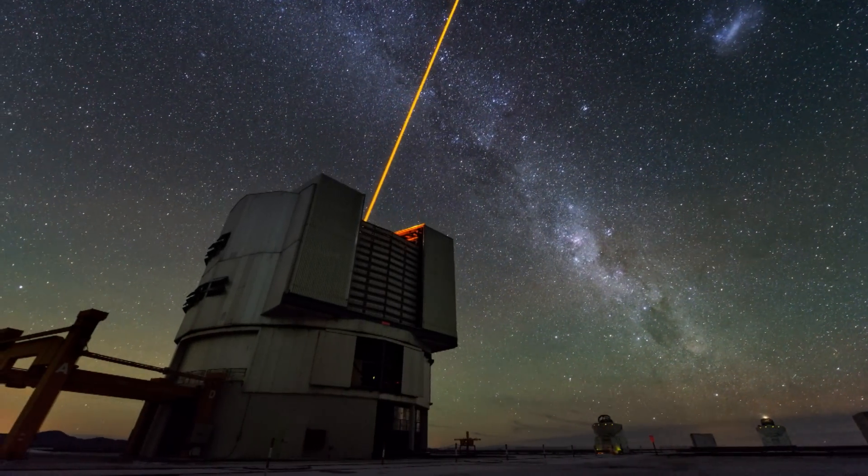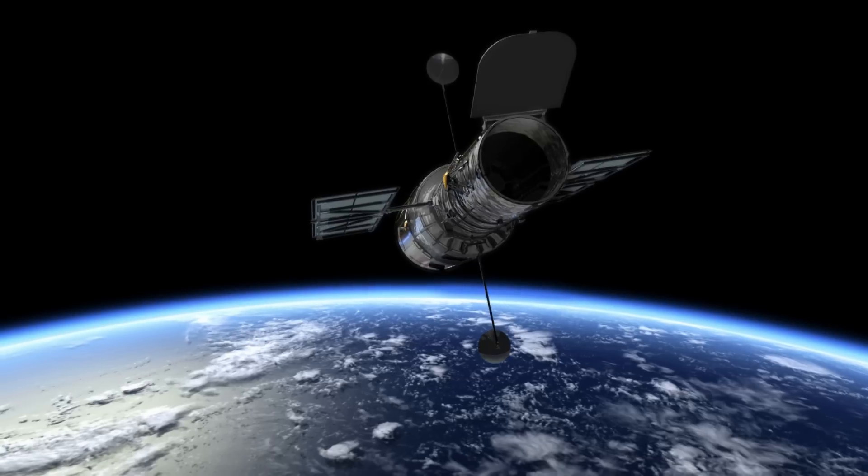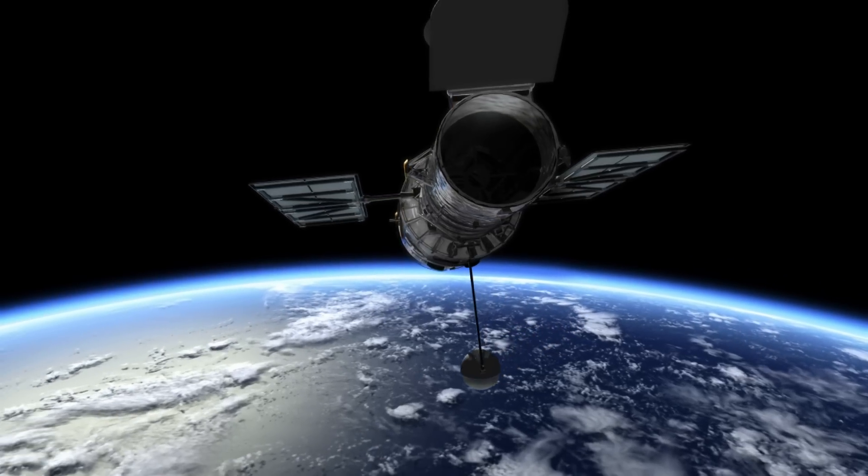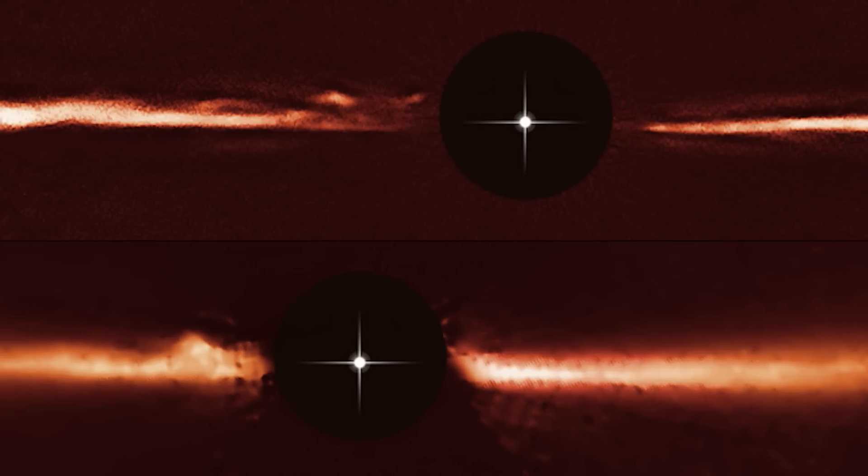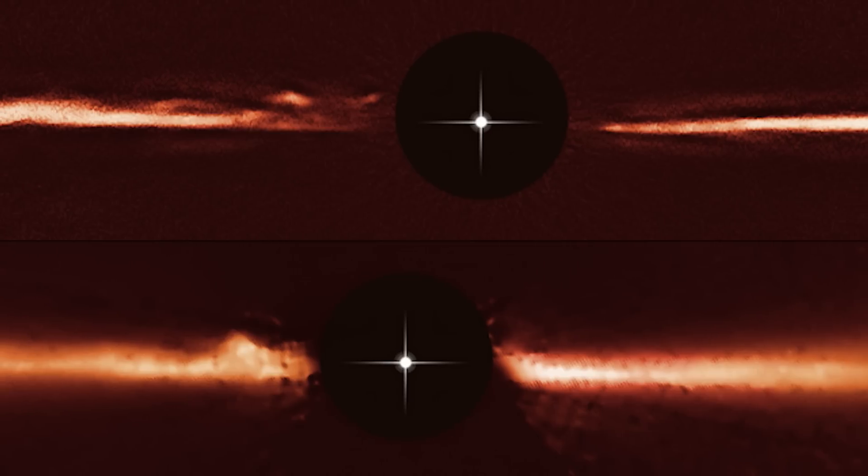Images from ESO's Very Large Telescope and the NASA ESA Hubble Space Telescope have revealed unique and totally unexpected structures in the dusty disk around the star AU Microscopii. These fast-moving, wave-like dust features are unlike anything ever observed or even predicted before now.